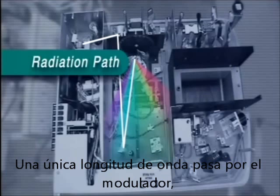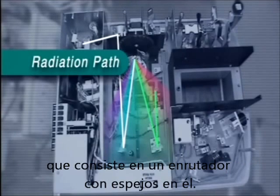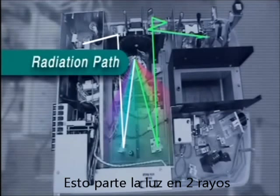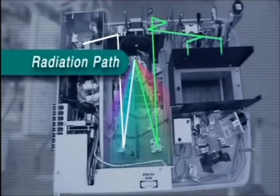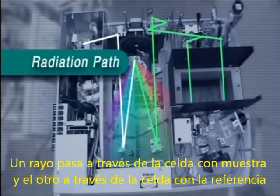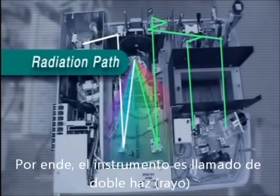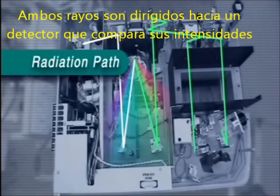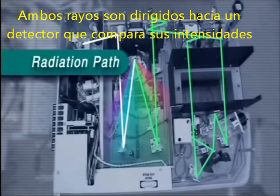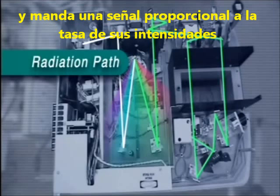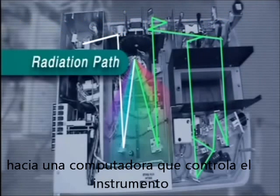A single wavelength passes into the modulator, which consists of a rotor with mirrors on it. This chops the light into two beams. One beam passes through the sample cell, while the other passes through the reference cell, so the instrument is referred to as a double-beam instrument. Both sample and reference beams are directed by mirrors onto a detector, which compares their intensities and sends a signal proportional to the ratio of their intensities to the computer that controls the instrument.